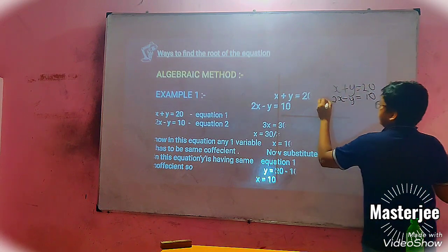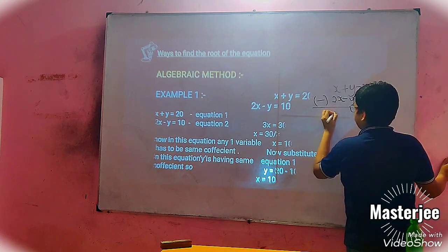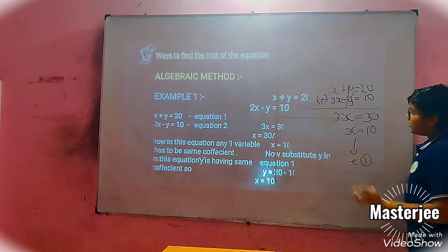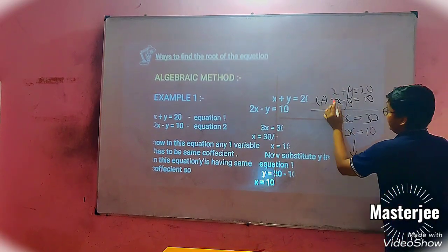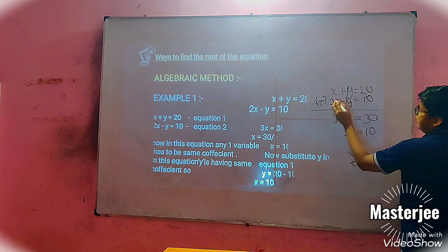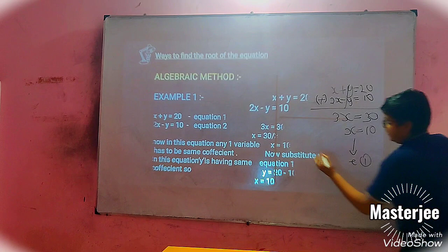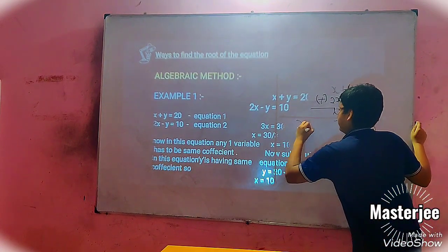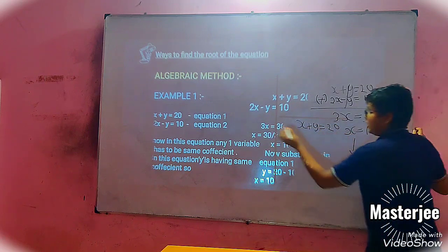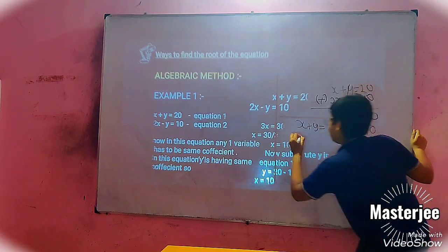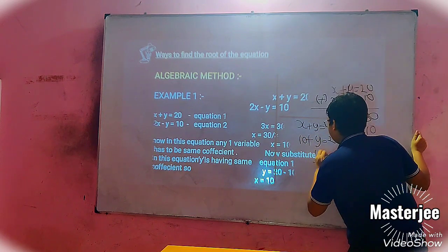Now, if we add the two equations, Y will cancel and we will get 3X equal to 30, then X equal to 10. Now we will substitute X into equation 1: 10 plus Y equal to 20, that means Y equal to 10.